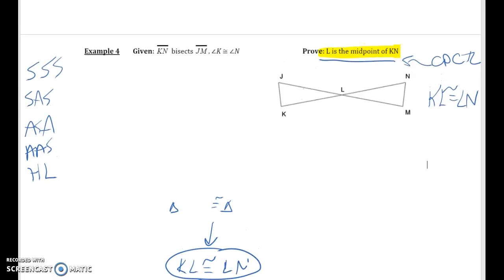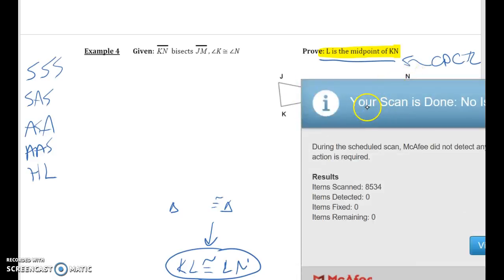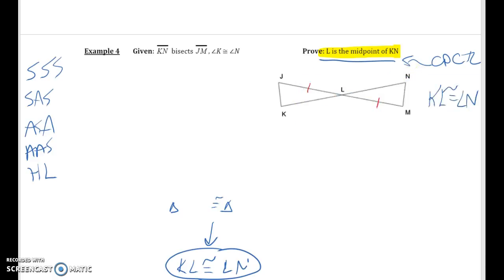Okay, so let's mark our diagram. KN cuts in half JM or bisects it, and angle K is congruent to angle N. So this is clearly not a right triangle, so we can get rid of hypotenuse leg. They only told us about one side, so I'm going to get rid of side side side and side angle side. Which means that we're down to two methods. We have this is going to lead me to a side, this is an angle, and so I'm looking for another side here.